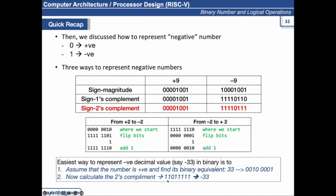2's complement is the method used in computers. If it is not specified what system to use to represent minus 33, by default you use 2's complement. If I specify to represent it in 1's complement, then you take its 1's complement instead.